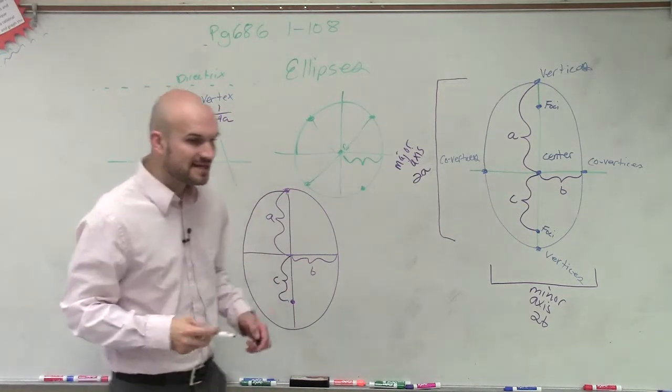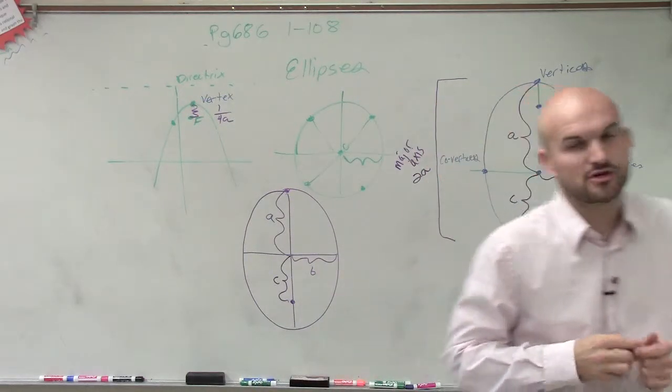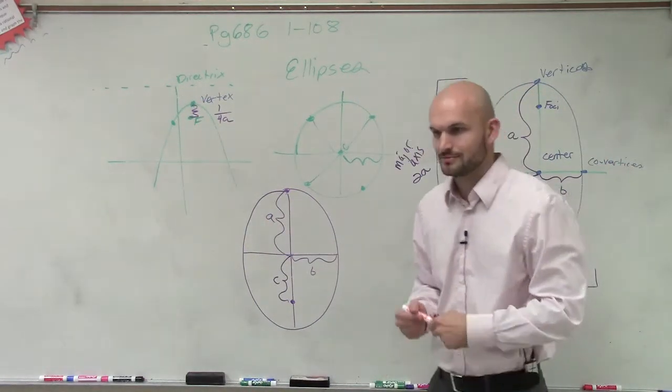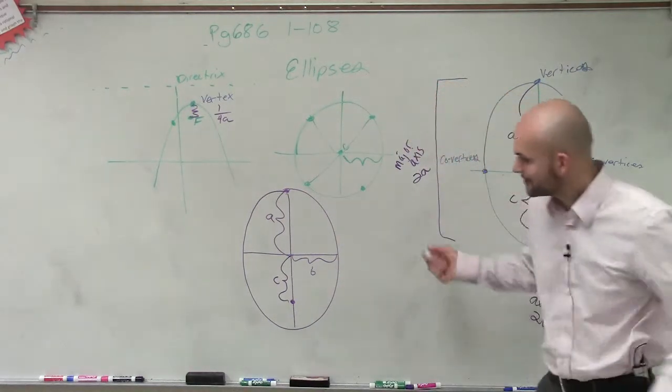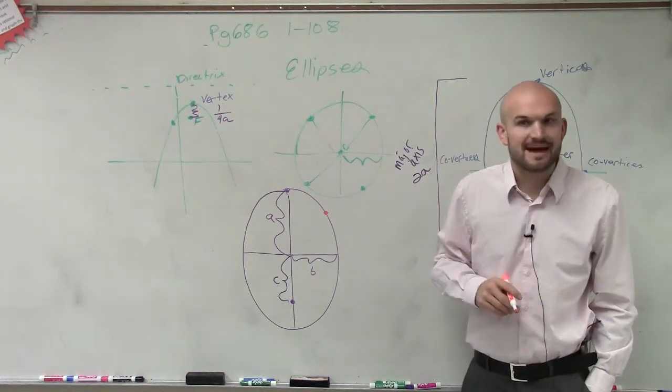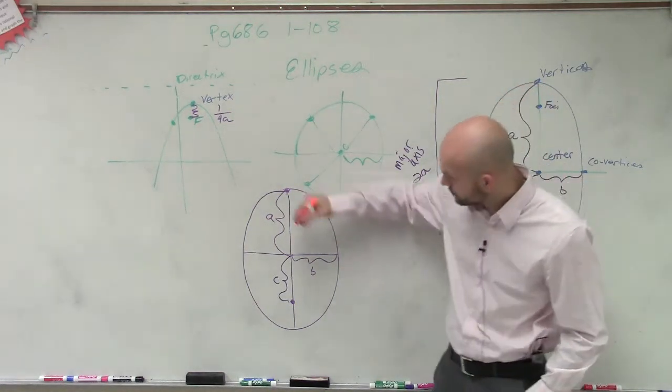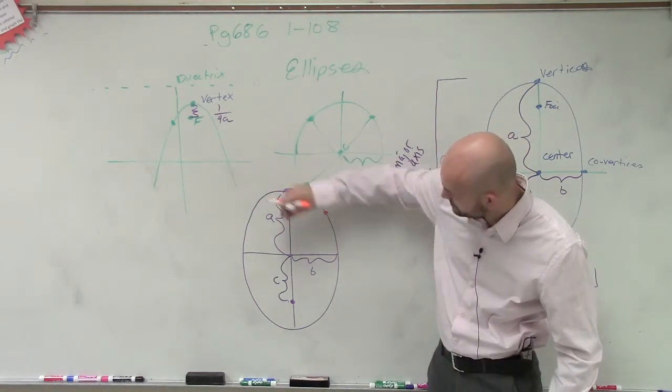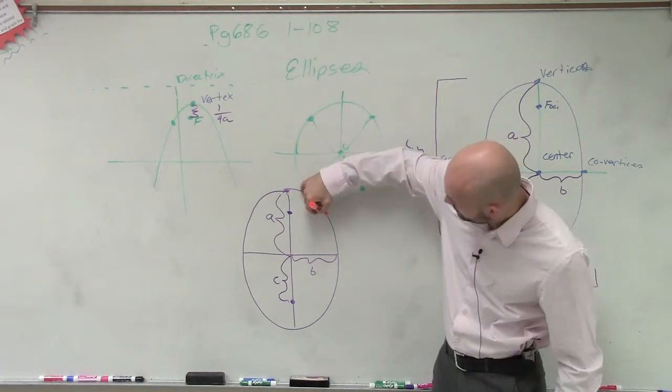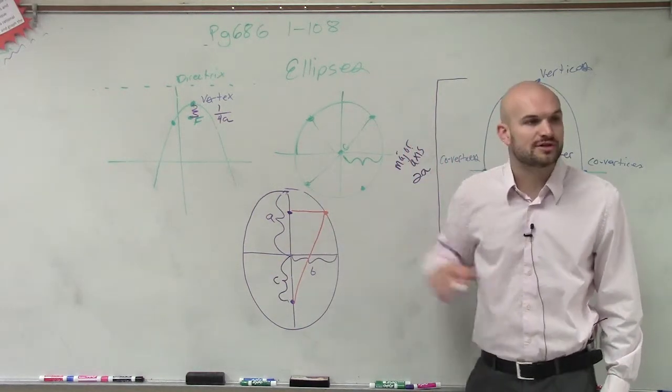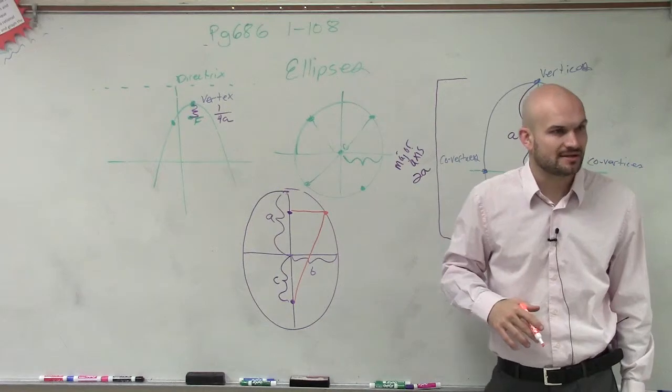Okay, the definition of an ellipse is going to be the sum of any point. So if I pick a point, all right, the definition of an ellipse is going to be, actually, we have two foci, right? So the definition of ellipse is the distance of these two points is always going to equal a constant that will be exactly the same.